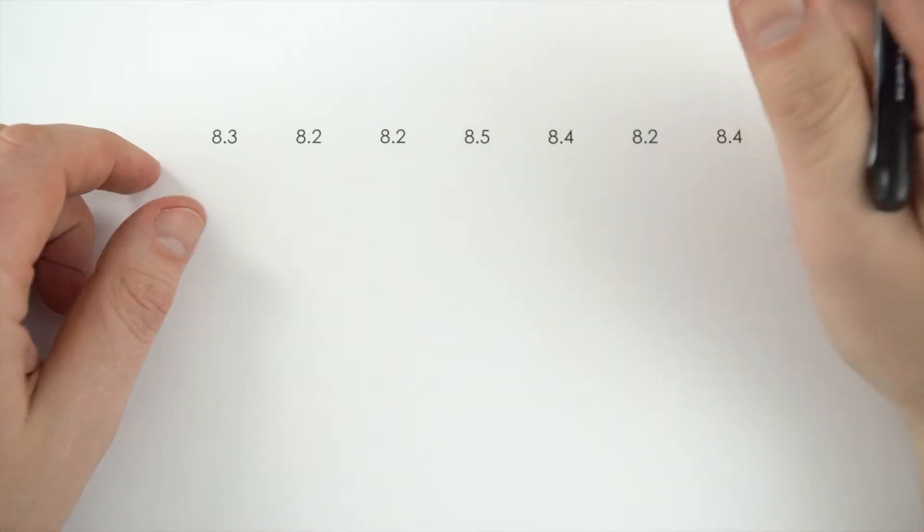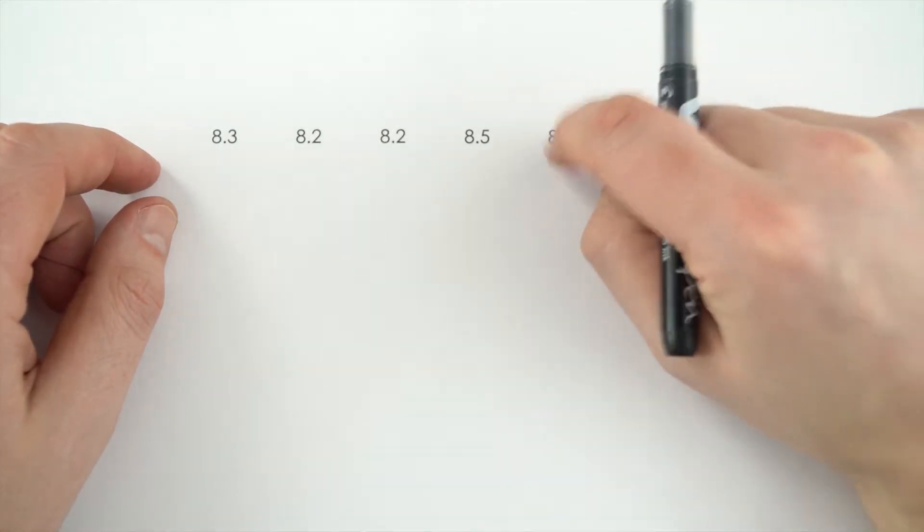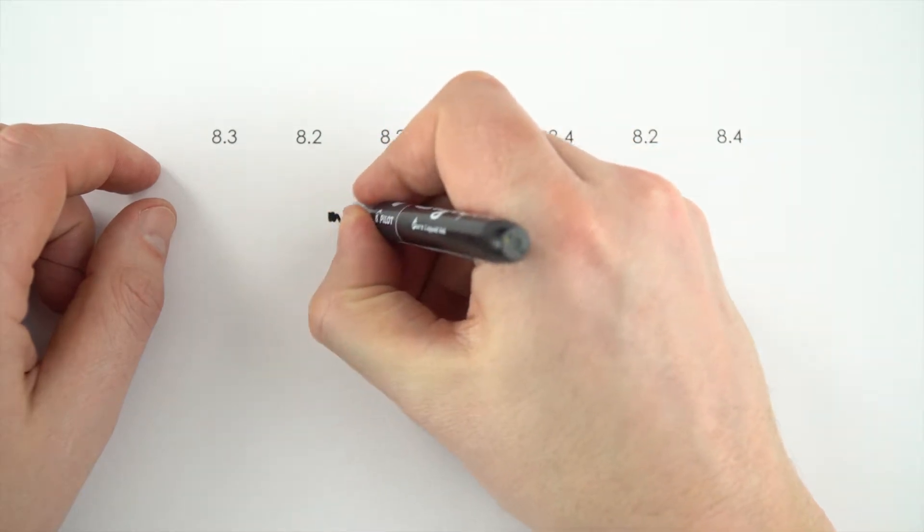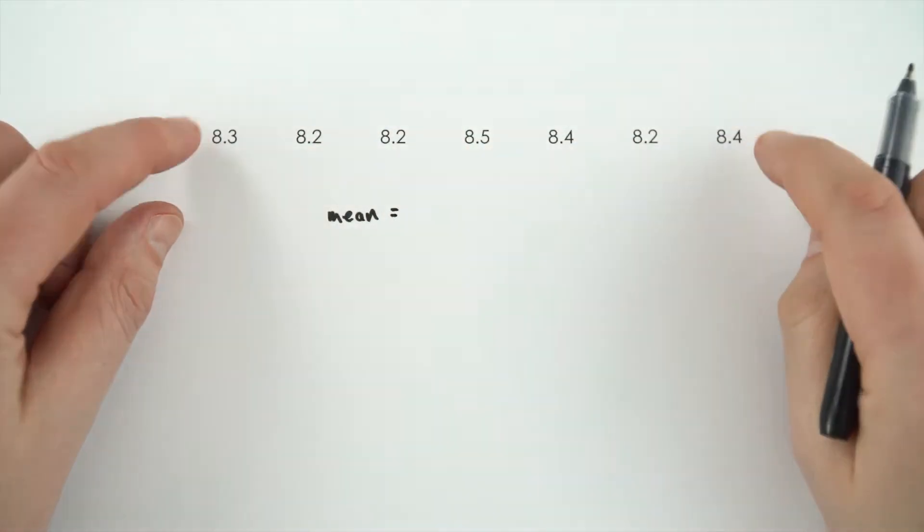Now, 99.9% of the time, the average that you're going to be taking in physics is the mean. And the way to work out the mean average is just equal to the sum of the numbers divided by the number of numbers.